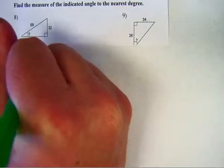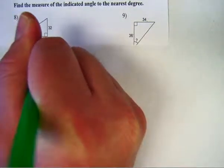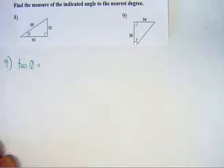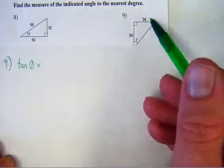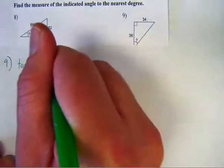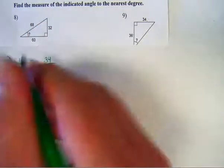Well, I know the tangent function is opposite over adjacent. If you think SOCA-TOA, TOA tangent is opposite over adjacent. So our opposite is 34. Our adjacent is 36.